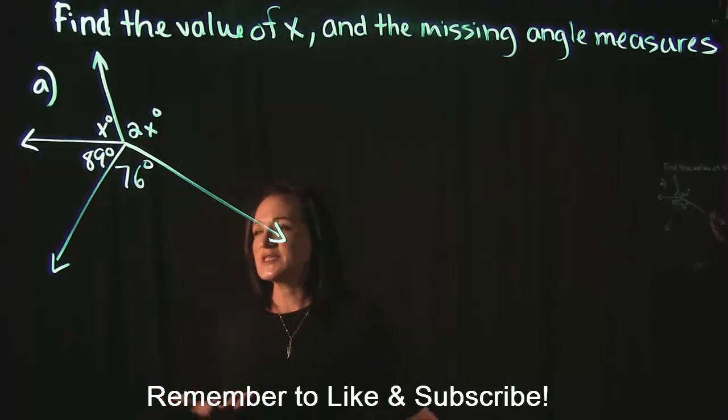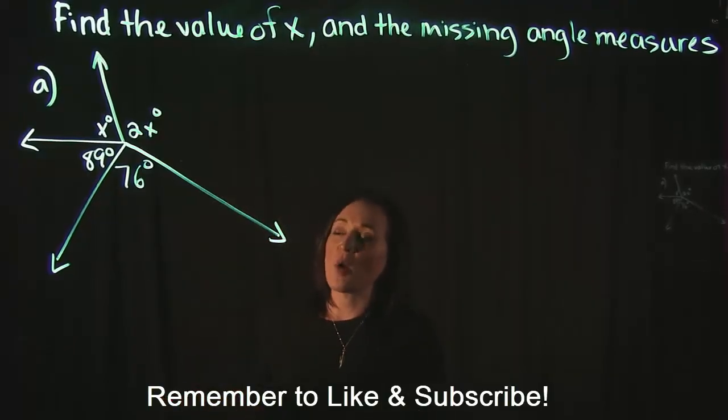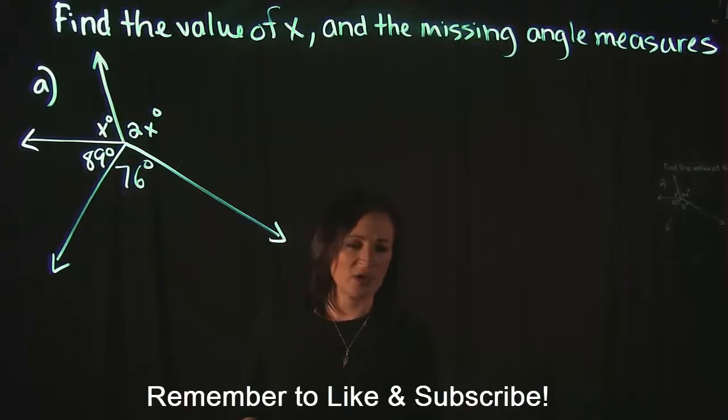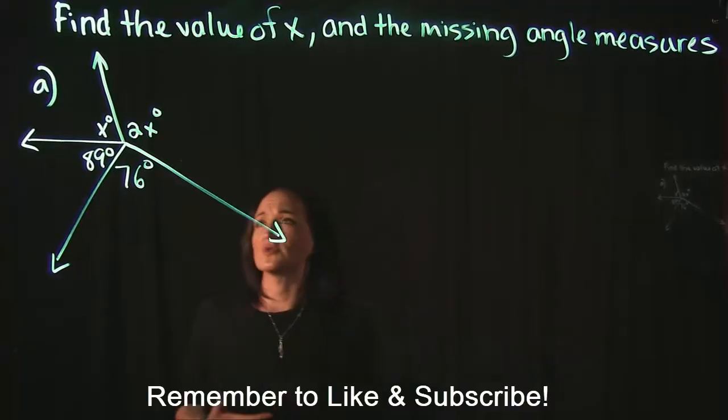So when taking a look at these kind of problems, typically one of the first things that you do want to look for are there any right angles in the problem, are there any straight angles in the problem, are there any vertical angles in the problem, because that's going to help you figure out a lot of the missing angles.